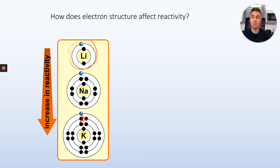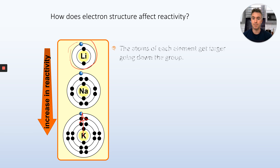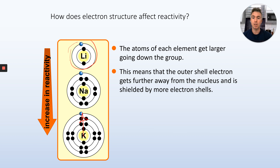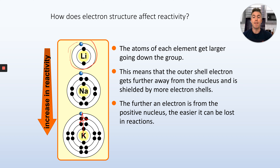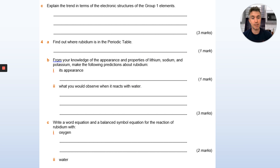Going down to potassium, those two are quite far apart, so it's much easier for potassium to give up that electron. That's why lithium is not as reactive as sodium, and sodium is not as reactive as potassium. Lithium is smaller, so that electron is closer to the nucleus and more attracted — harder to get away. Potassium is bigger still, the electron is even further away, and so it's much easier for that electron to escape and react. The atoms get larger going down the group, the outer electron gets further from the nucleus and is shielded more, and the further an electron is from the positive nucleus the easier it can be lost — this is why reactivity increases going down group 1.